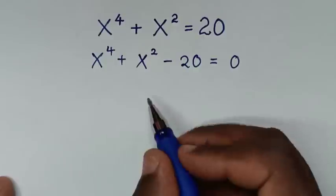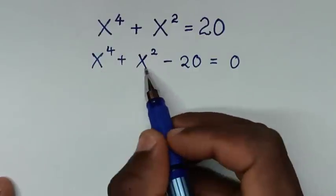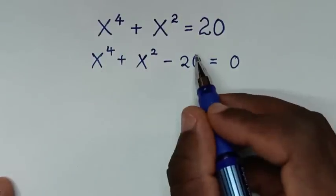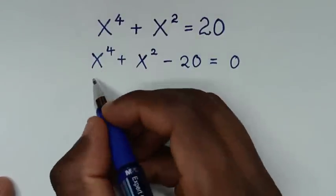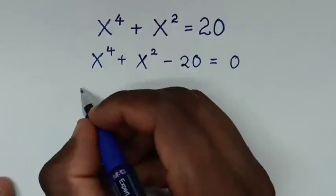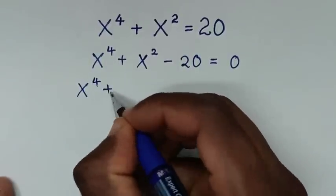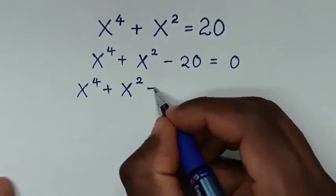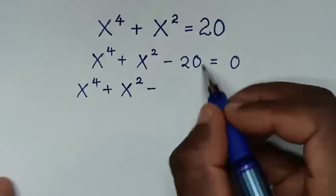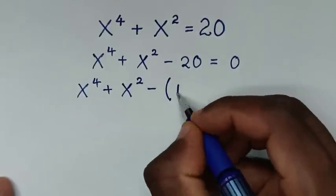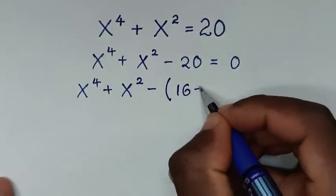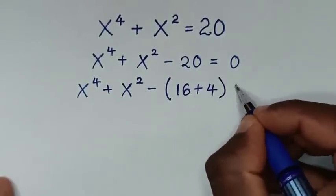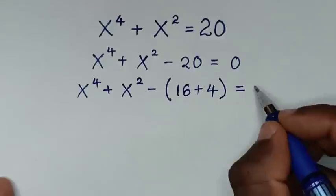Because we have these two exponents, we split the 20. So it will be x to the power 4 plus x to the power 2, then minus 20 is the same as minus 16 plus minus 4, in brackets, equal to 0.